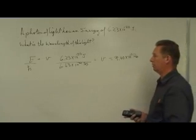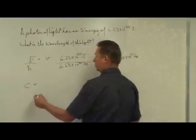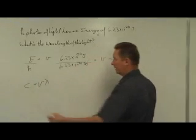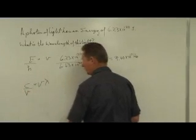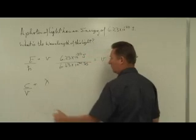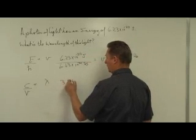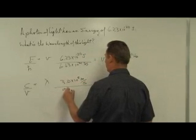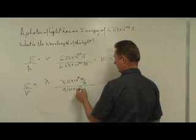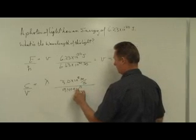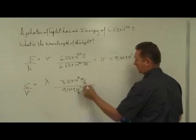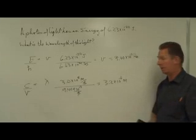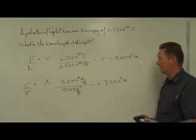Now I can plug that frequency into the other equation. The speed of light equals frequency times wavelength, so isolating wavelength by dividing both sides by frequency: 3.0 times 10 to the 8 meters per second divided by 9.4 times 10 to the 13 cycles per second. Seconds cancel out, giving a wavelength of 3.2 times 10 to the negative 6 meters.